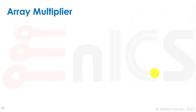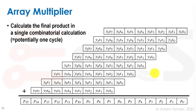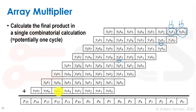Instead, we can use hardware to compute the result in a single combinatorial calculation, potentially in one cycle. Each partial product bit is just an AND gate between one bit of the multiplier and one bit of the multiplicand. All these AND gates can be evaluated in parallel, so after just one AND gate delay we have all n-by-n partial product bits available simultaneously.